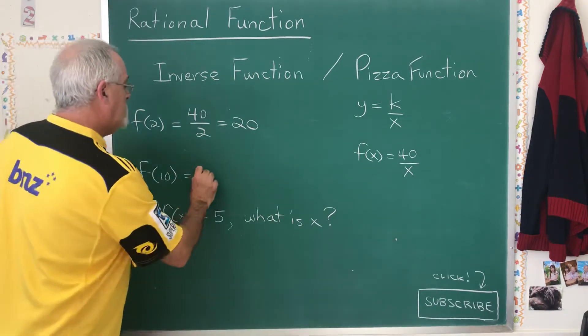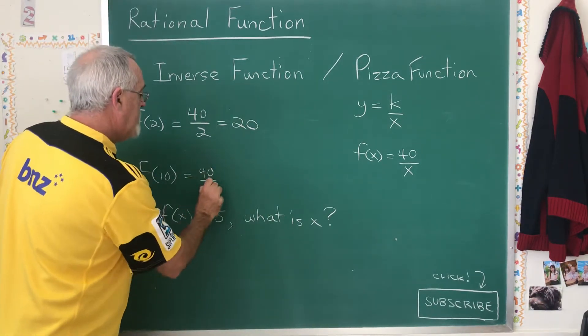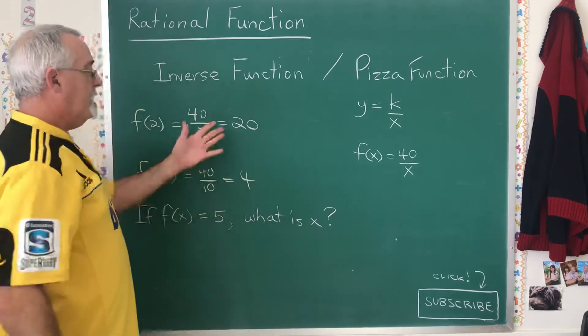f of 10 equals 40 over 10, which is 4. We have our answers.